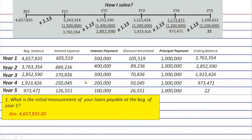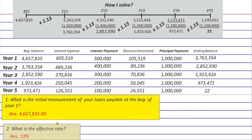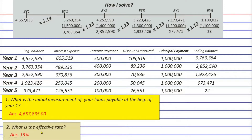We can conclude that possible question number one is solvable using the amortization table, and the same applies to question number two: what is the effective rate of the loans payable? We can get the effective rate by trial and error and interpolation if it's not given, and it doesn't matter whether you use the timeline or the amortization table — you'll still perform trial and error and interpolation.